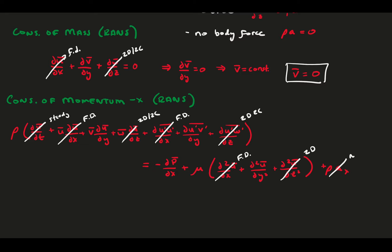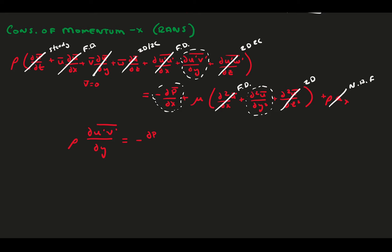A lot of terms go away because we can say things are steady, fully developed, 2D, and 2C, and there are no body forces. Additionally, conservation of mass told us V-bar is zero. This is almost exactly the same as laminar channel flow, with one primary but important difference. This pesky U-prime, V-prime term on the left-hand side sticks around. This term represents one of the Reynolds stresses, which as a result is balanced by the mean pressure gradient and the mean viscous force terms on the right-hand side.